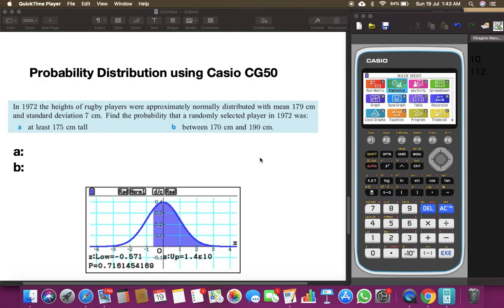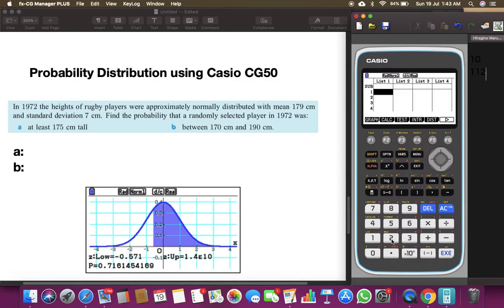Both these questions are of cumulative distribution and the question says it is normally distributed. So it's a problem that we'll solve using ncd. Let's quickly go to statistics by pushing 2 and let's go to distribution.